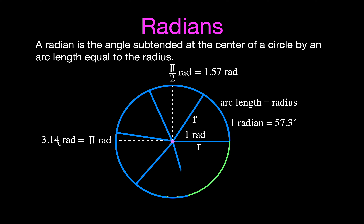Going all the way around the circle, there are basically a little more than six radians — one, two, three, four, five, six. To complete the full circle you need a little more, and we know that's two pi radians, which is 6.28. So a circle has 360 degrees and two pi radians, which is 6.28 radians. We normally don't write the decimal — we just say two pi radians.